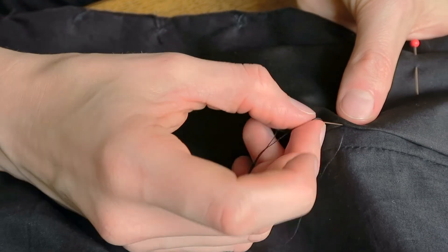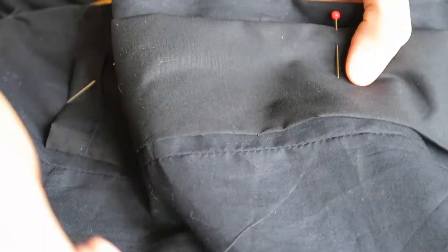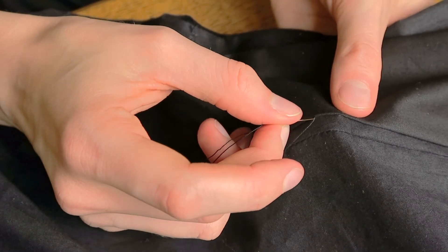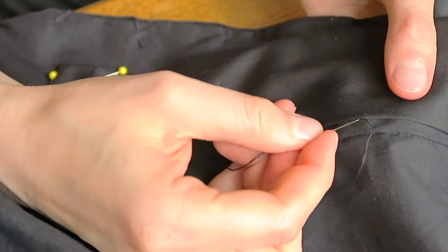Pin and hand stitch your pocket to the lining. When stitching, be careful to only catch the lining so it's invisible from the outside. We don't want any muggles catching on that you're magical.